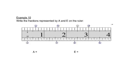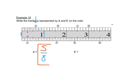In this last example, we'll do points A and E. For point A, we count the spaces between 0 and 1: there are 8 spaces, so our denominator is 8. Point A is 5 spaces over. Since we can't divide 5 and 8 by anything evenly, our fraction stays as 5 eighths of an inch.